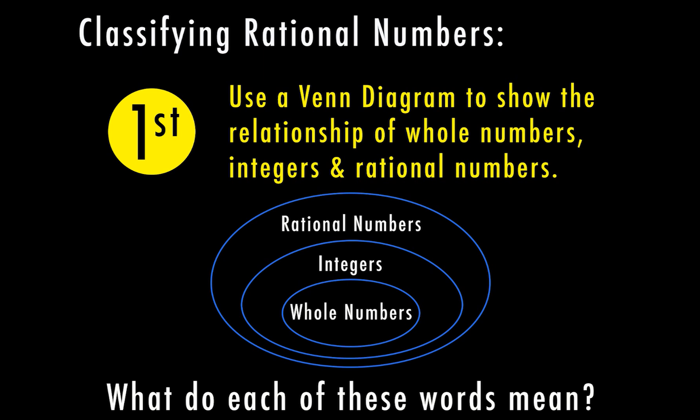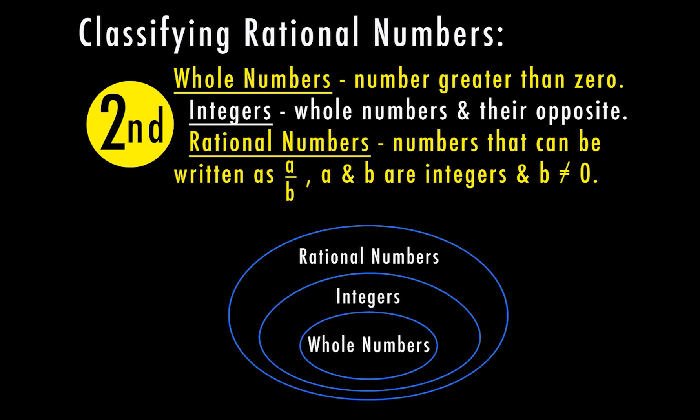So what does each of these words mean? Whole numbers are numbers greater than zero. Integers are whole numbers and their opposites. Rational numbers are numbers that can be written as A over B — a fraction where A and B are integers and B cannot equal zero, meaning the denominator can't be zero. Whole numbers include 1, 2, 3, 4, and so on, all the way to infinity.